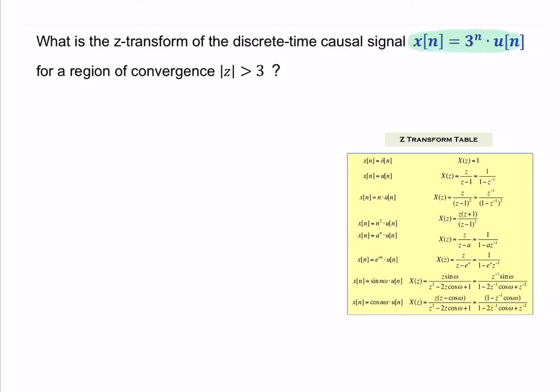Here we're given a discrete time signal, x of n, and we're asked for x of z, the z-transform.